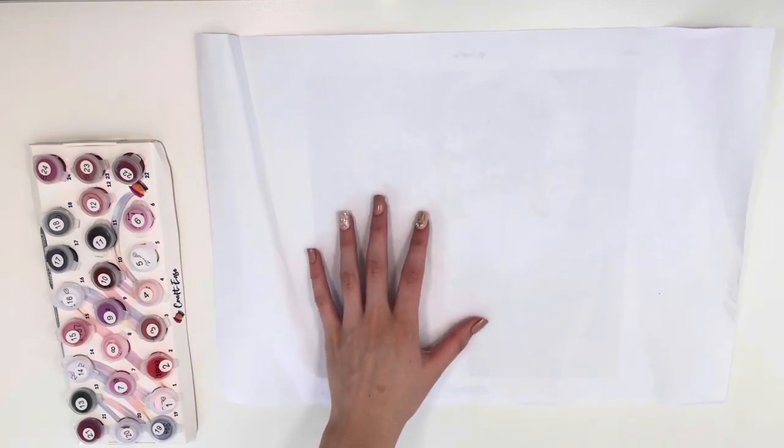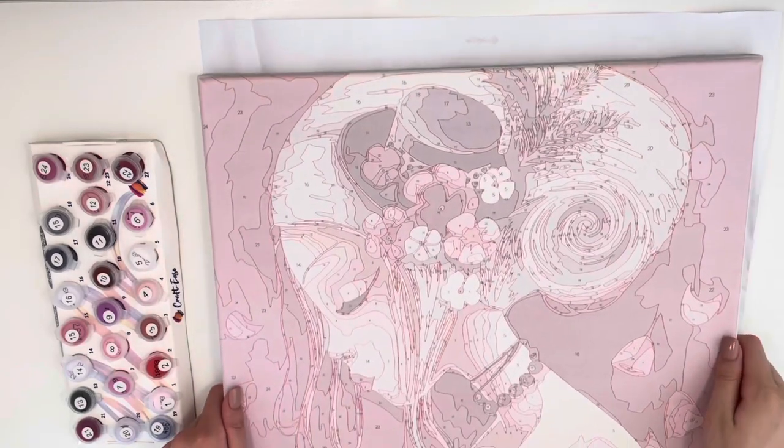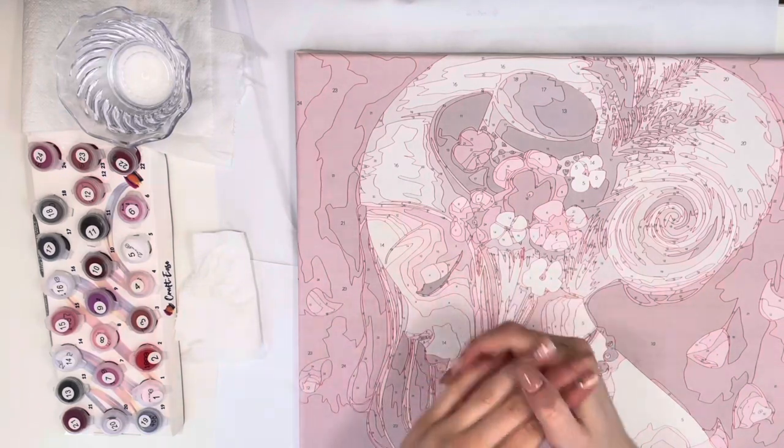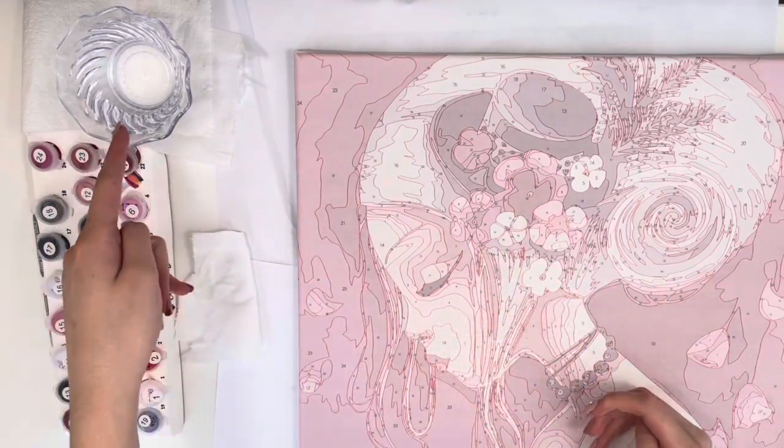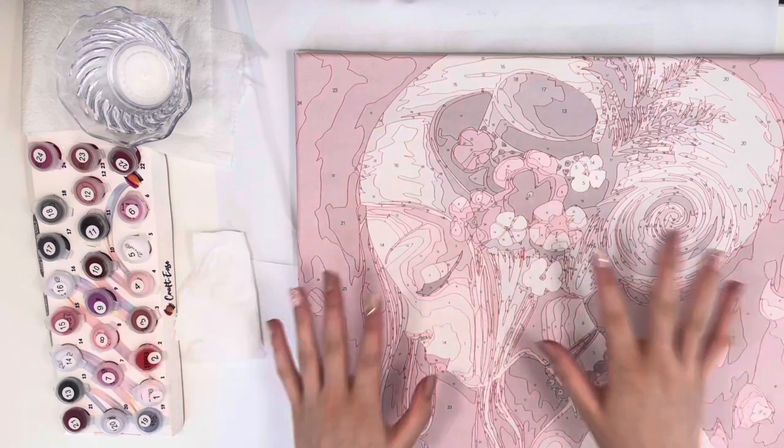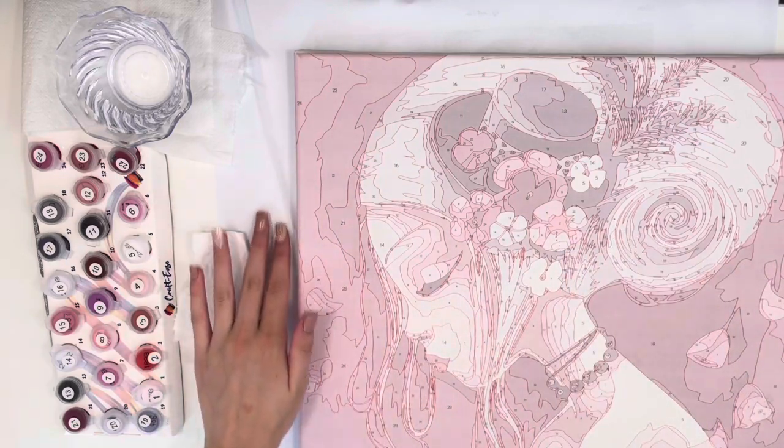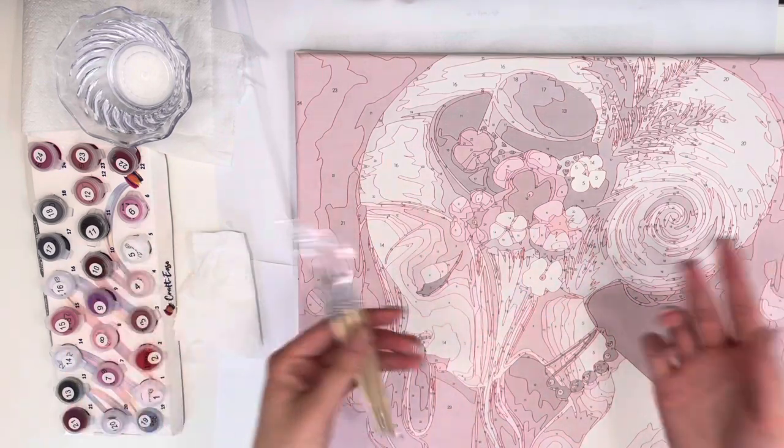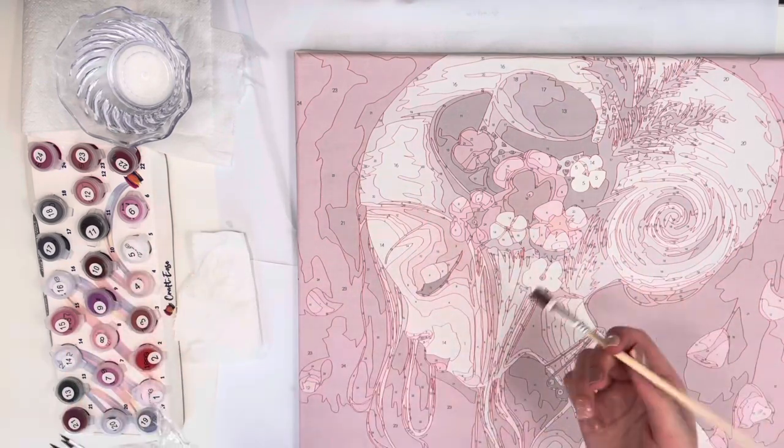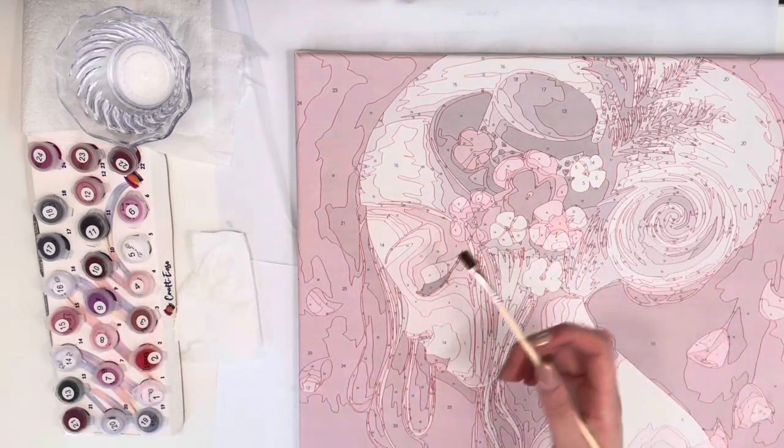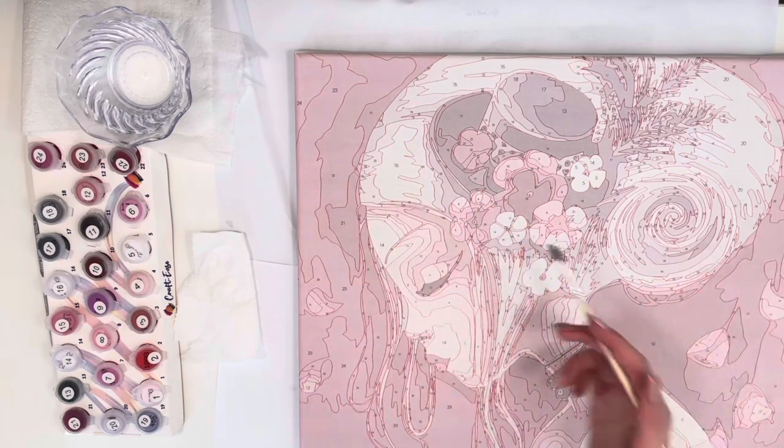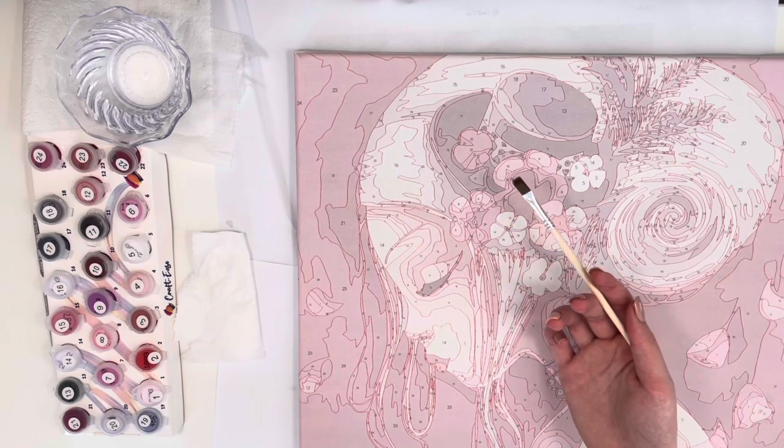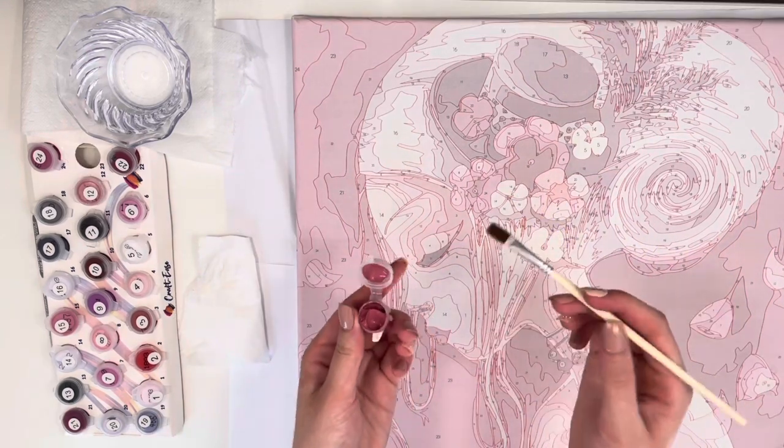So right here I'm placing this paper like upside down so that I don't get my table dirty. Right here I'm all set up. I have my paints, I brought some water so that I can wash off the paint. I have the painting with some paper underneath, and now we can start painting. So the instructions say that we should start off painting the bigger areas. As I see, number 23 takes up a lot of space, so that's what I'm going to be painting. There we go, and let's begin.